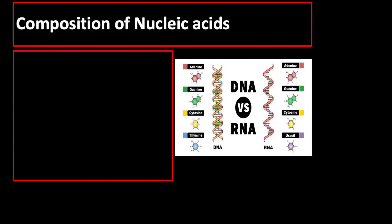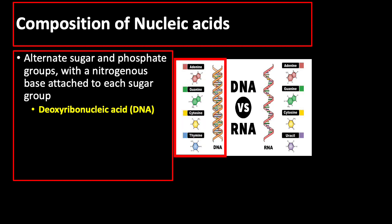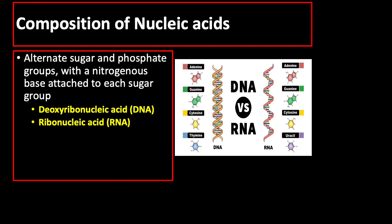Now for a short review about nucleic acids: nucleic acids consist of alternate sugar and phosphate groups with a nitrogenous base attached to each sugar group. There are two major nucleic acids. DNA contains a 5-carbon sugar deoxyribose and is mainly found in the nucleus, with four nitrogenous bases: purines adenine and guanine, and pyrimidines cytosine and thymine. RNA is found in the cytoplasm, with purines adenine and guanine, and pyrimidines cytosine and uracil.